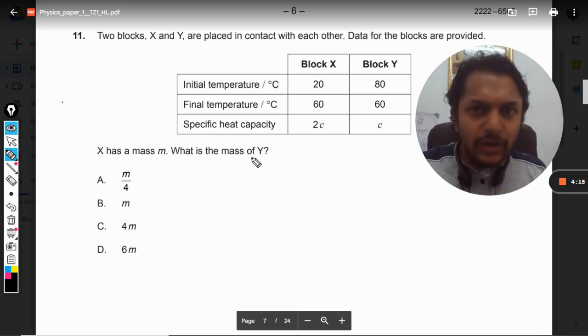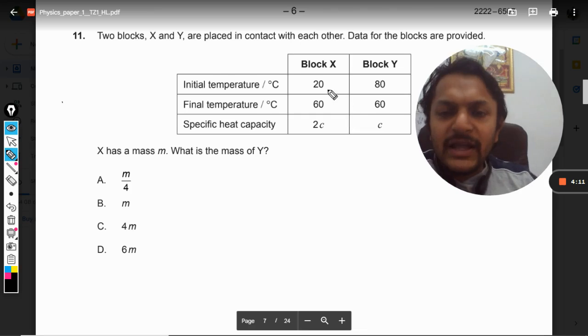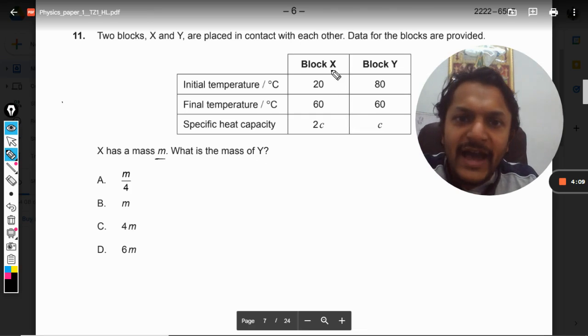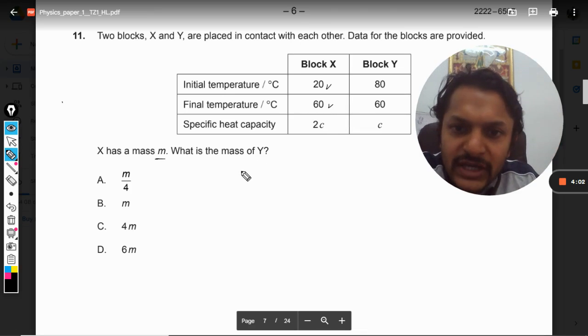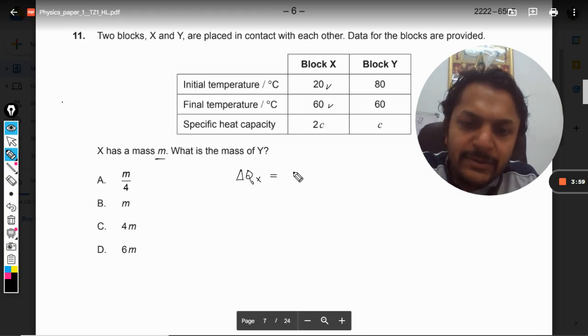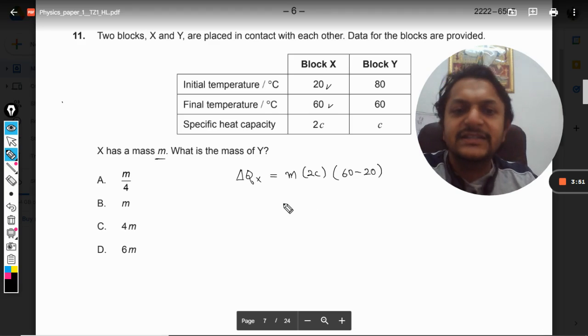So according to that principle, I can say that if M is the mass of X and it was at the lower temperature earlier, now it has increased the temperature. So heat gained by X will be given by mass M, specific heat is 2C, into delta T. So this is the heat gained by the body X.